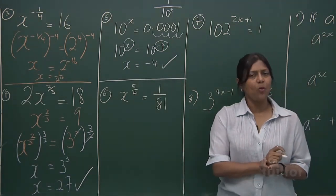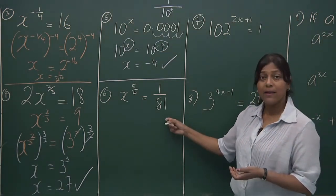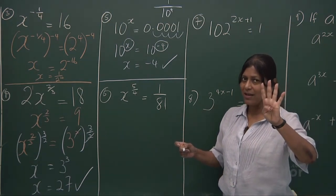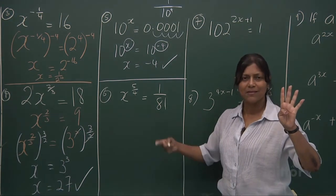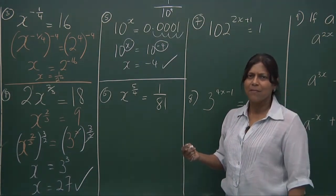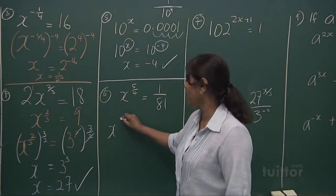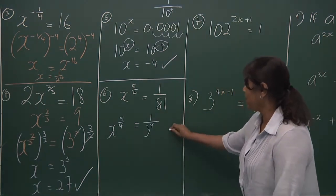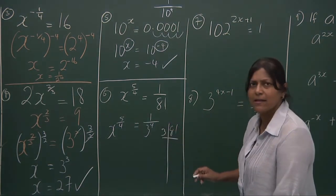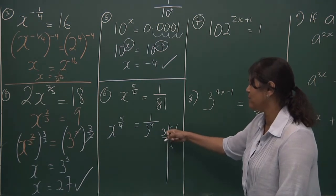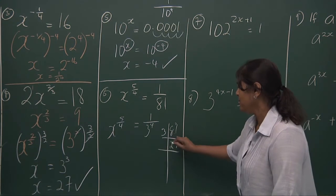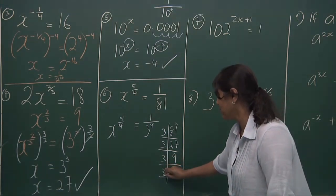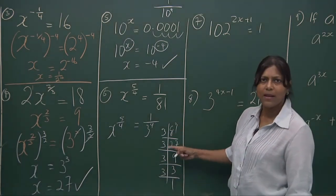Let's look at the next sum. What is 1 over 81? 81 is 3 to the power of 4: 3, 9, 27, 27 times 3 is 81. Always have your indices tables at your fingertips — the maths becomes so easy. x is 5 over 4, and 81 is 3 to the power of 4. If you don't know, you can break 81 down using prime factorization: 81 divided by 3 repeatedly gives 3, and you can see that 81 is 3 to the power of 4.